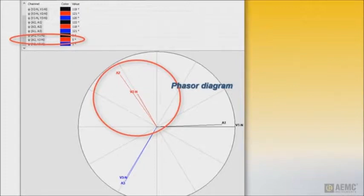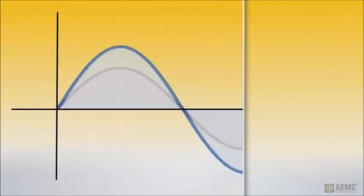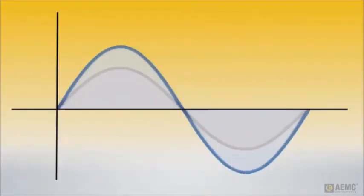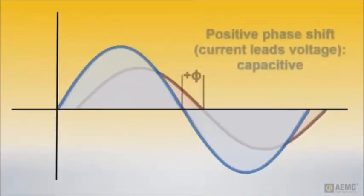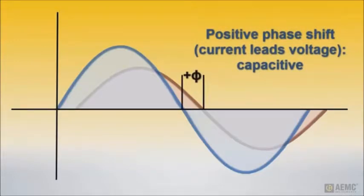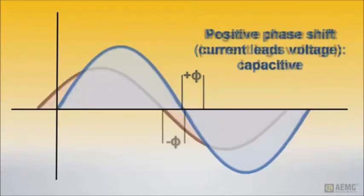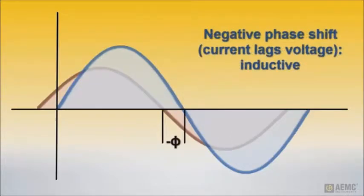The causes of phase shift include inductive and capacitive loads. In a capacitive circuit, the current waveform leads the voltage, producing a positive phase shift such as the one observed in our example. In an inductive circuit, current lags voltage, resulting in a negative phase shift.